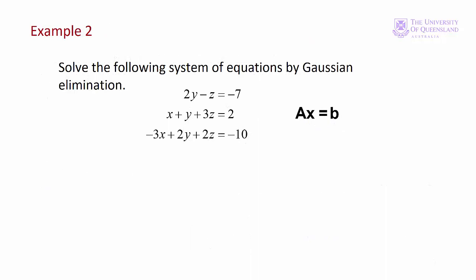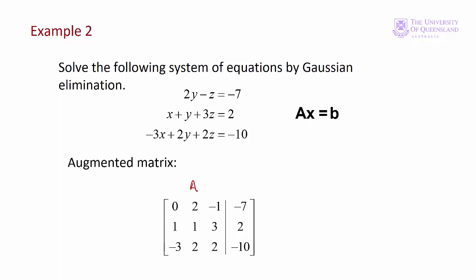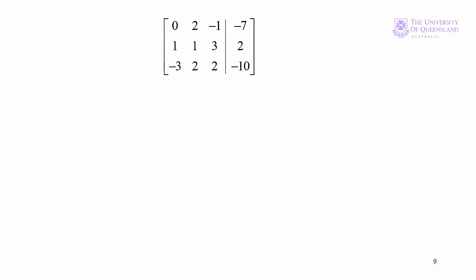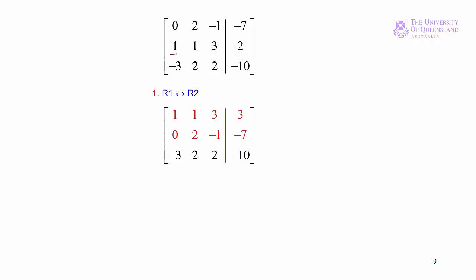Now let's go back to example one and see how we can solve the problem more efficiently using an augmented matrix rather than the full equations. In example two we have the same system of equations. We formulate the augmented matrix: on the left the matrix of coefficients and on the right the column vector of constants, separated by a vertical line. We want to get a one in the a11 position. We have a one in the a21 position, so the easiest thing to do is to swap rows one and two. That gives us the one where we want it and also a zero in the a21 position.